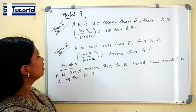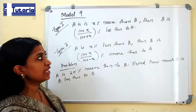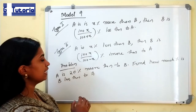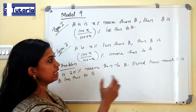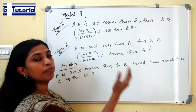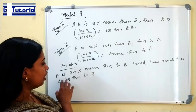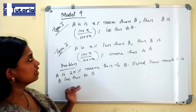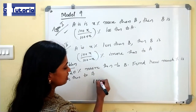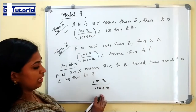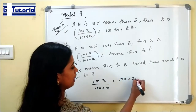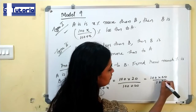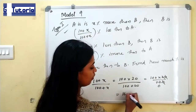This is the 9th model. There are 2 cases. In the first case, if A is x% more than B, then B is (100x)/(100 + x)% less than A. The second case is: if A is x% less than B, then B is (100x)/(100 − x)% more than A. Problem: If A is 20% more than B, find how much percentage B is less than A. This is the first case, so B is (100 × 20)/(100 + 20) = 2000/120 = 100/6, which is 16.66 percentage.